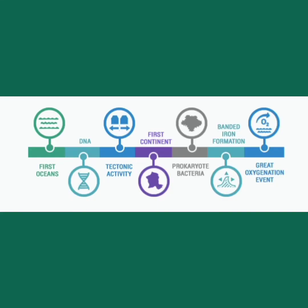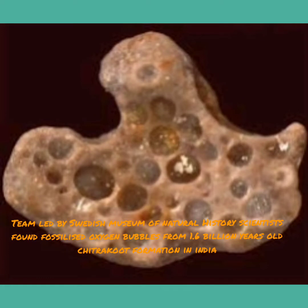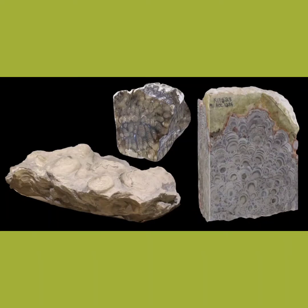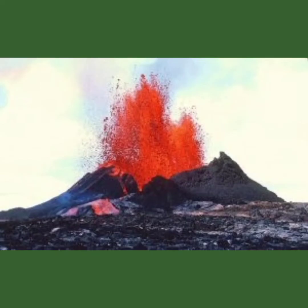Scientists say that water existed inside the rocks that make up the Earth itself. Earth's interior contains minerals with hydrogen and oxygen. Volcanoes continually degassed, releasing H₂O as water vapour. The Moon contributed to this process by stabilizing Earth's climate and giving it seasons. The first tectonic activity in the Archean Eon helped build continents. The bigger climate allowed the formation of continents because the lithosphere became more stable.